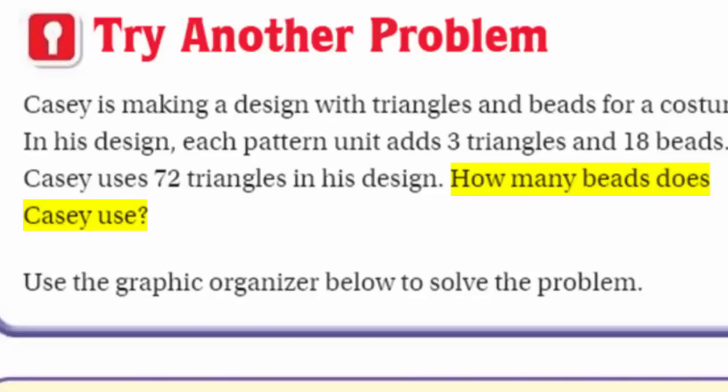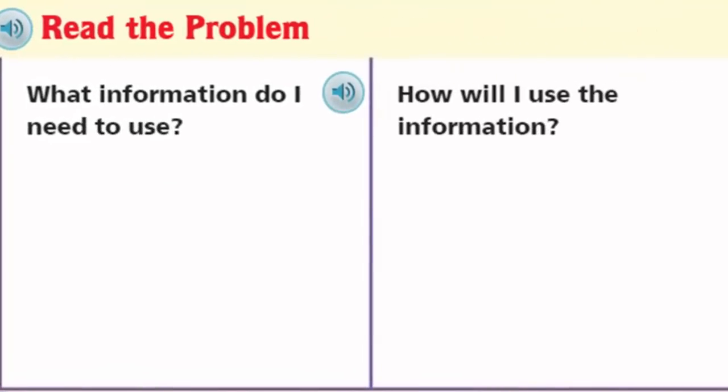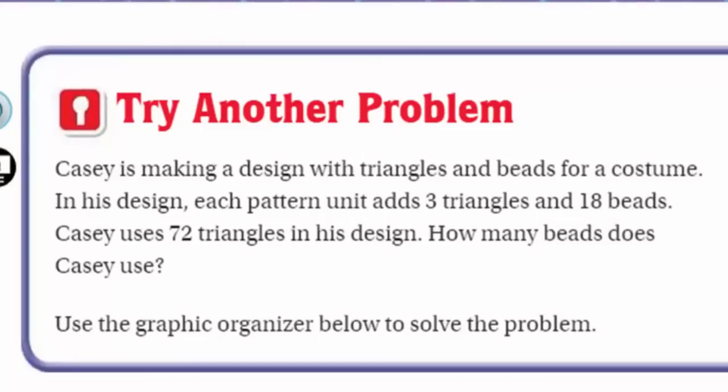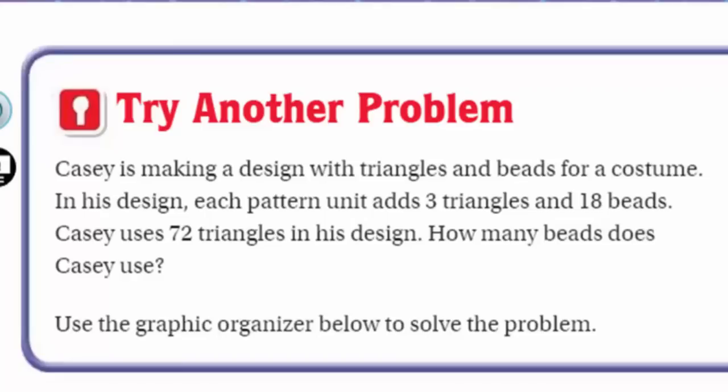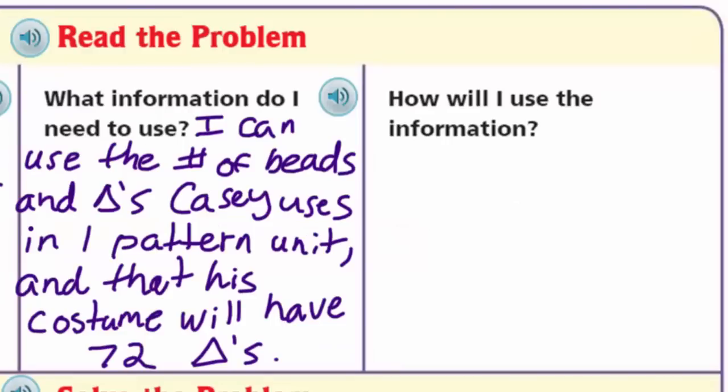So what I need to find is basically the number of beads he uses. Now it says, what information do I need to use? Well, looking at the problem up here again, I could use the number of beads and triangles Casey uses in one pattern unit, because it states in the problem, in his design, each pattern unit adds three triangles and 18 beads. I'm also going to need to use that in his costume, Casey uses 72 triangles, so I'm going to need that information as well. The pound sign here just means number, so it says I can use the number of beads and triangles Casey uses in one pattern unit, and that his costume will have 72 triangles.